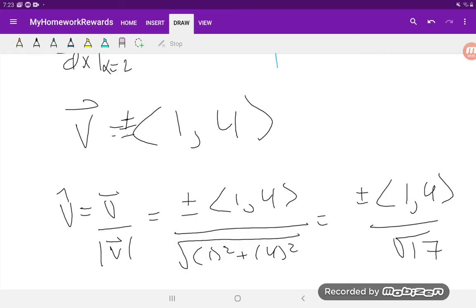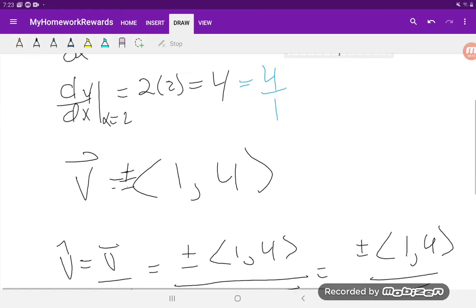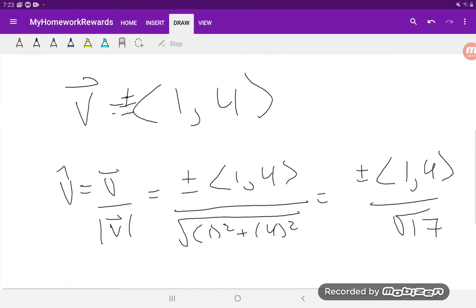And that's it. So what we've done is we calculated the slope to the parabola y equals x squared at the point x equals 2. And we use that information to create a vector, which basically had a rise and a run that was equivalent to the slope. We noted that we could also have a positive or negative version. And either or would run parallel to that tangent line. Lastly, we found the unit vector by dividing by the magnitude.